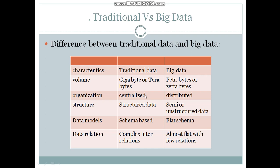Next characteristic: organization maintains centralized data in traditional systems. In big data, the organization maintains distributed data. Distributed data means the data is stored on two or more files or servers. Structure: traditional data stores only structured data. Big data stores either structured data, semi-structured data, or unstructured data. Structured data means in the form of tables or it follows some procedures.